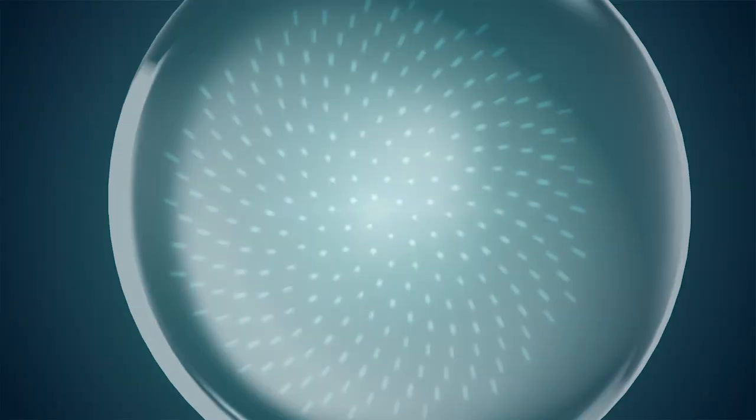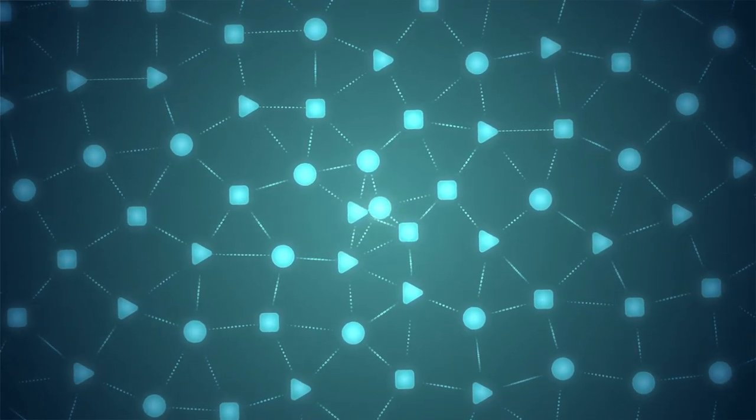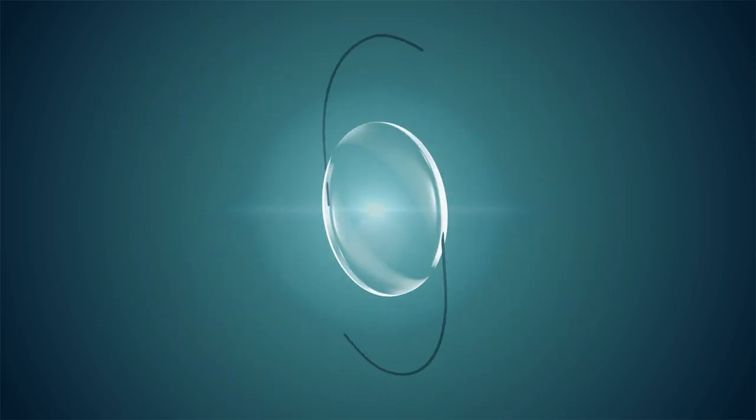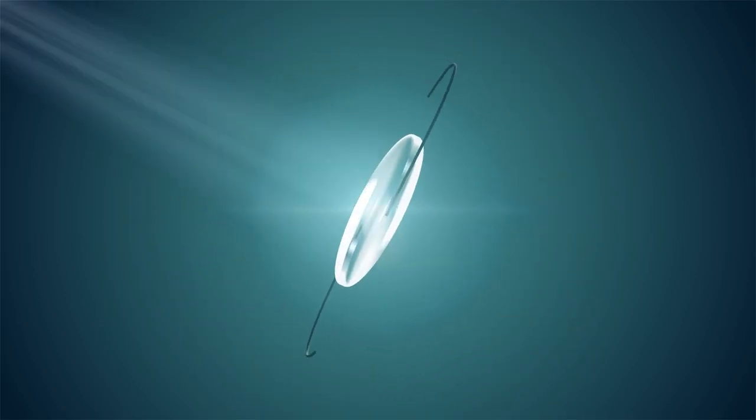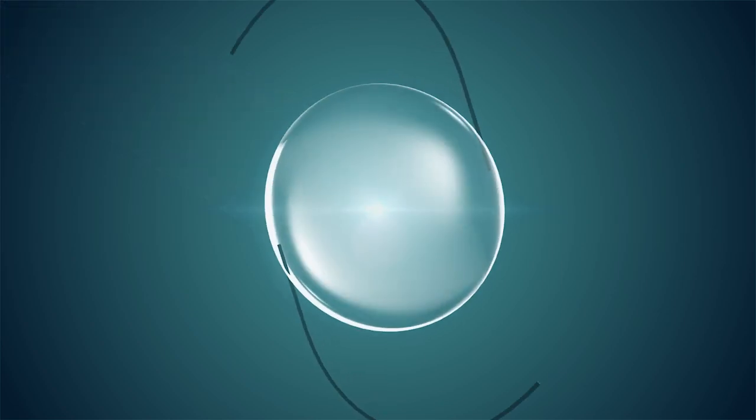The light adjustable lens contains light-sensitive molecules and uses photochemistry and diffusion to achieve adjustability. A calculated beam of UV light from a patented light delivery device is directed at the lens to precisely change the lens's shape and focus based on the patient's desired refraction.